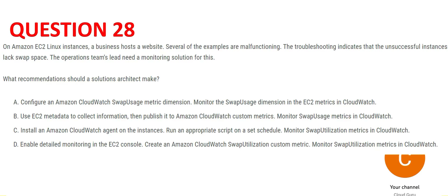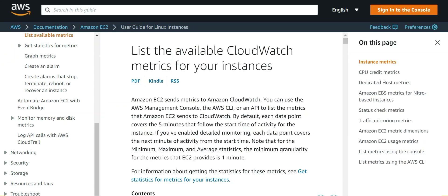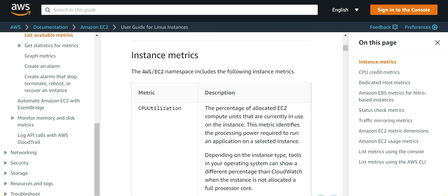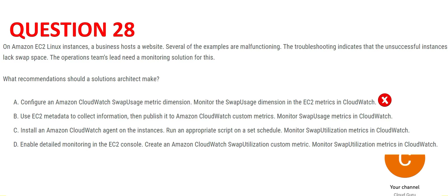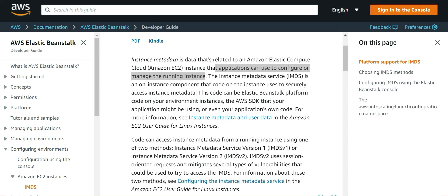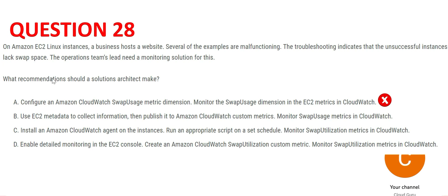These are the four options. The first option says to use a CloudWatch swap usage metric. I checked the documentation and searched for swap usage metrics — looking at instance metrics, CPU credit metrics, and the full list — I could not find a swap usage metric there. So option A is wrong. Option B says to use EC2 metadata, which collects information used by applications to configure and manage running instances. It is not used for monitoring swap space, so B is also wrong.